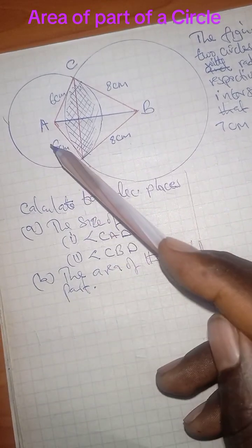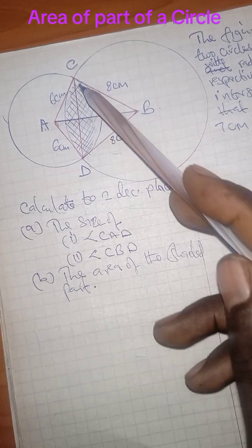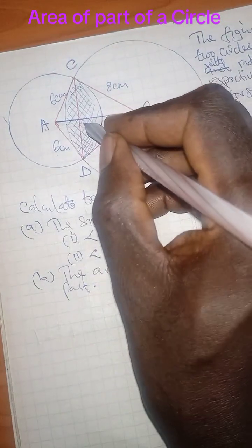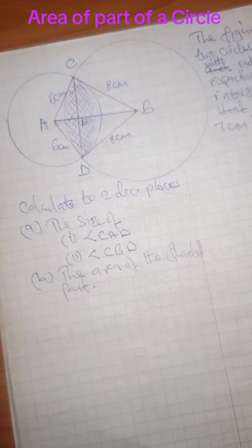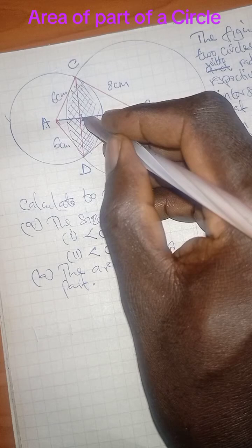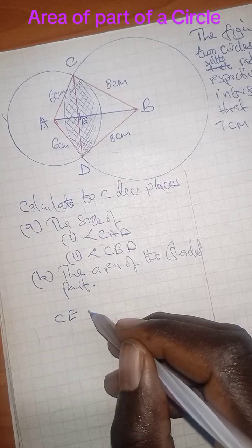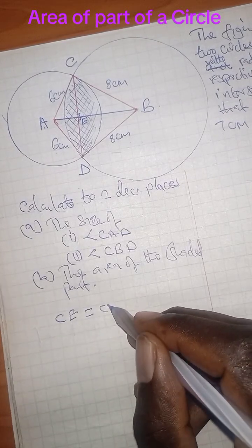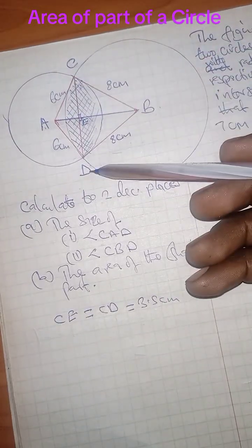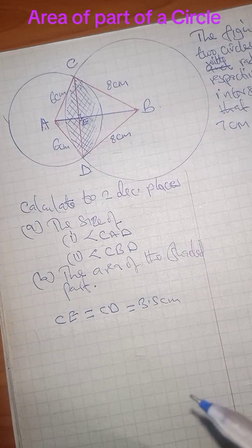Now, this line AB bisects line CD into two equal parts. Let's say it bisects at a point E and it bisects at right angles. What we mean is that CE is equal to CD/2, which is equal to 3.5 cm, because I have been told this chord is 7 cm. So if it has been bisected into two equal parts, it becomes 3.5 cm.